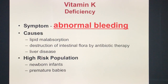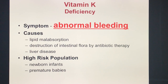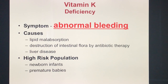Deficiency of Vitamin K manifests primarily as abnormal bleeding. Causes include: lipid malabsorption, liver disease such as liver cirrhosis, and destruction of intestinal flora by antibiotic therapy. The high-risk population for Vitamin K deficiency is newborn infants and premature babies.